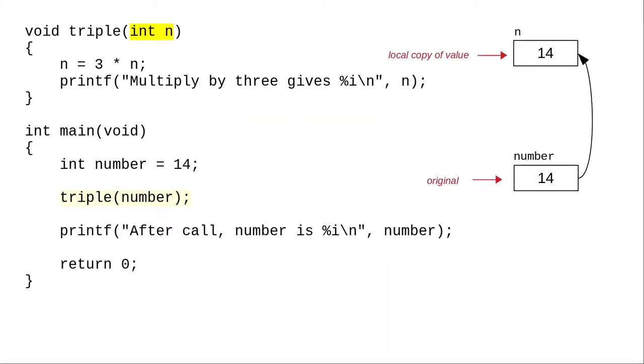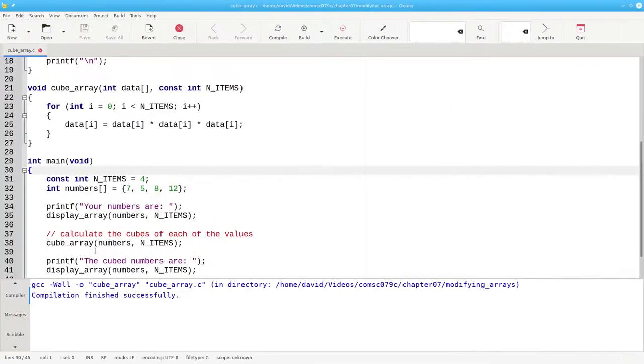You might be remembering the video about call by value and wondering, wait a minute, you told us that C copies the values of the arguments to the parameters and the original value isn't modified.